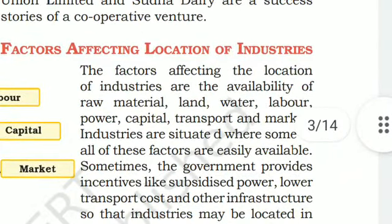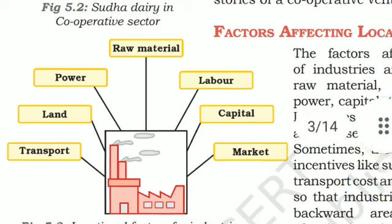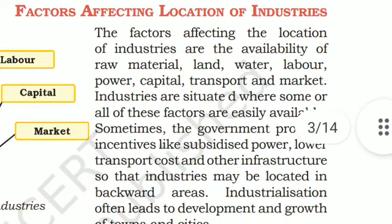Factors affecting location of industries include: availability of raw materials, labor, capital, market, power, land, and transport. Industries are situated where some or all of these factors are easily available. Sometimes the government provides incentives like subsidized power, lower transport costs, and other infrastructure so that industries may be located in backward areas. Industrialization often leads to development and growth of towns and cities.